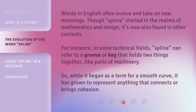Words in English often evolve and take on new meanings. Though spline started in the realms of mathematics and design, it's now also found in other contexts. For instance, in some technical fields, spline can refer to a groove or key that holds two things together, like parts of machinery. So while it began as a term for a smooth curve, it has grown to represent anything that connects or brings cohesion.